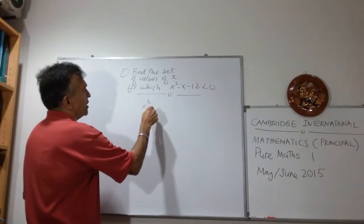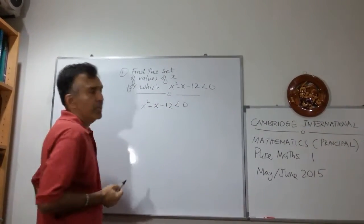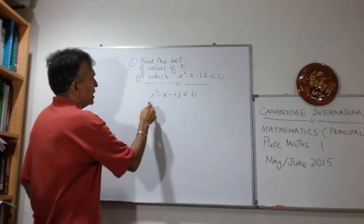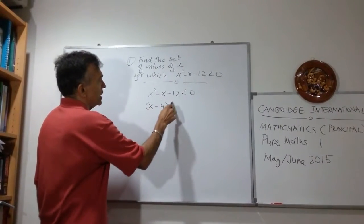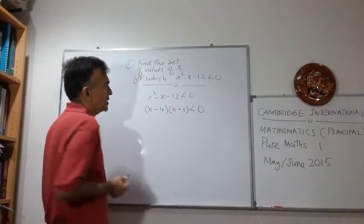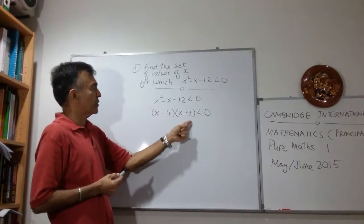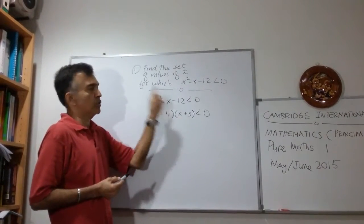x squared minus x minus 12 less than 0. Let's factorize it. I've got x minus 4, x plus 3 less than 0. Double check. Minus 4x plus 3x minus x and I have minus 12. Good.